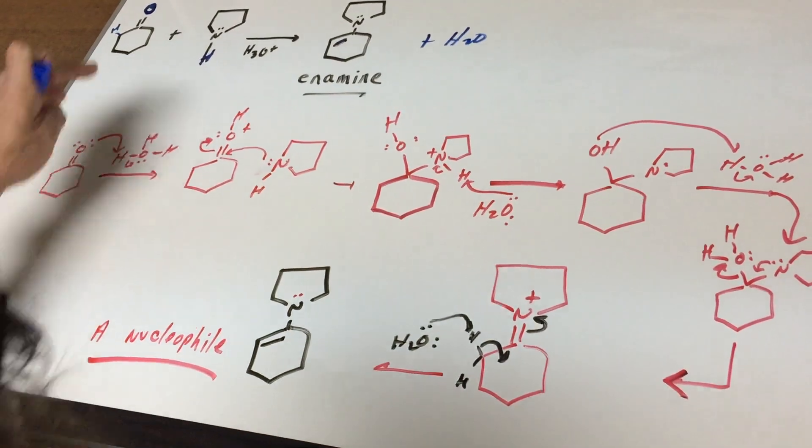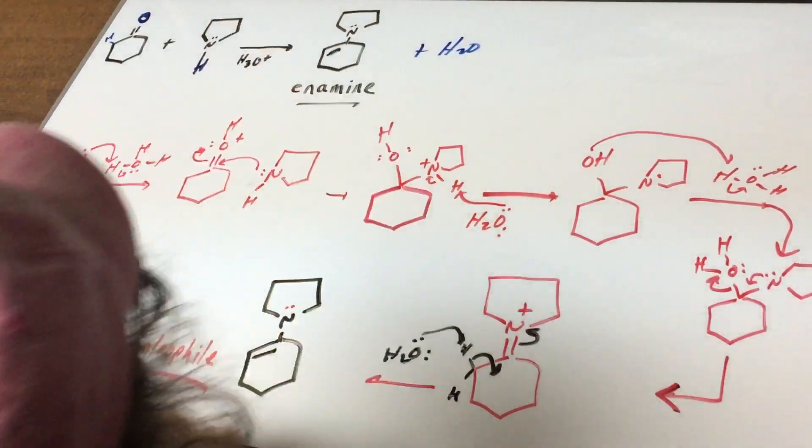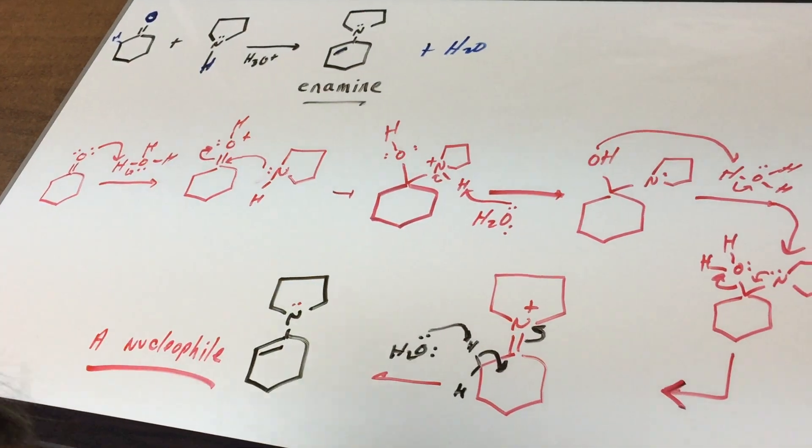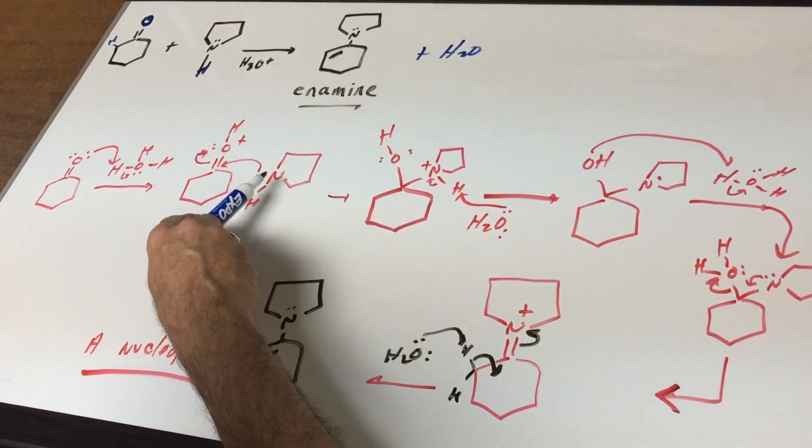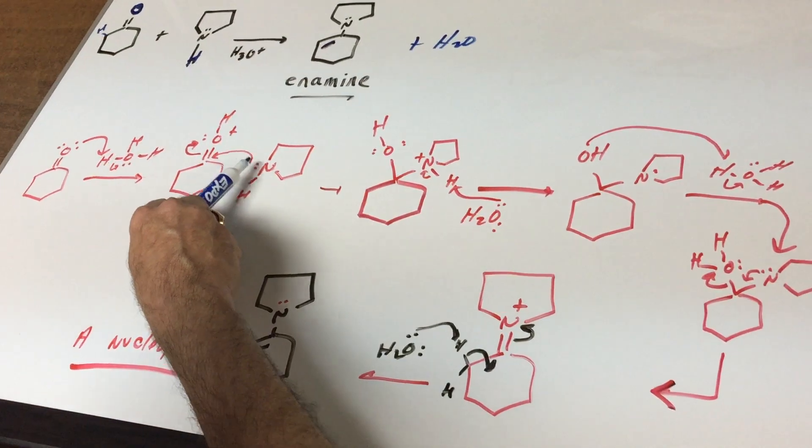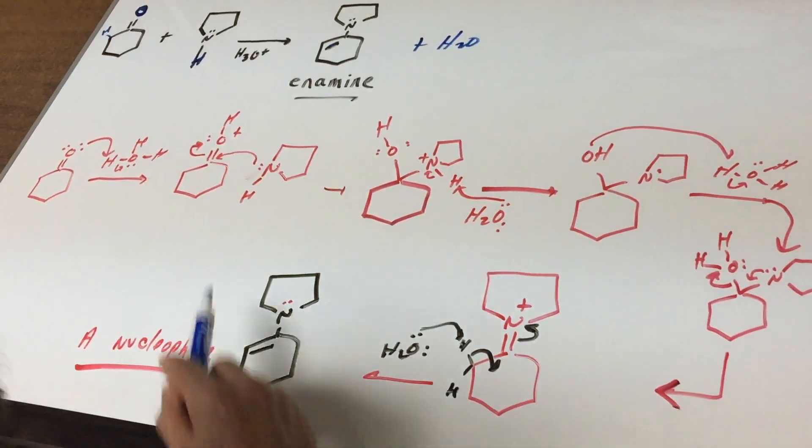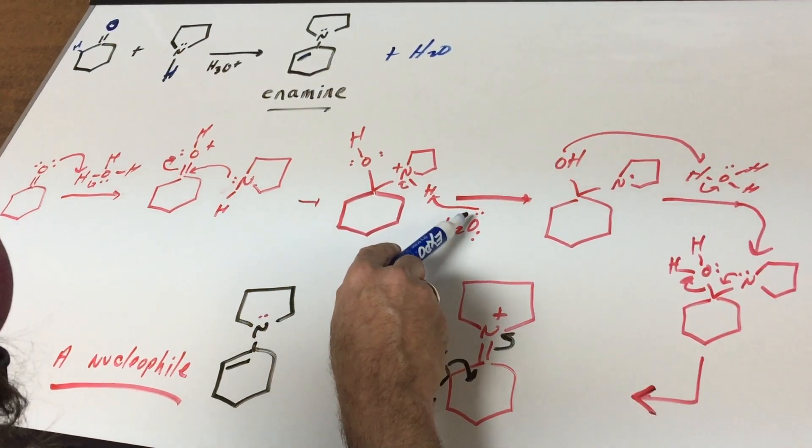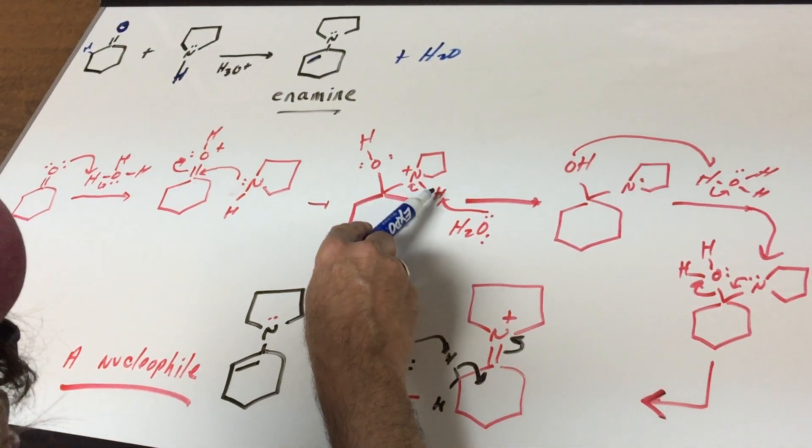My first step is I'm going to protonate the carbonyl as usual. In the second step, the secondary amine acts as a nucleophile and does a nucleophilic addition. As you can see, that would give me this, and then the water would simply pull off the H and now we have everything neutral.